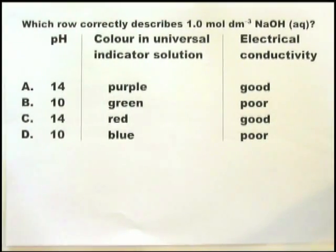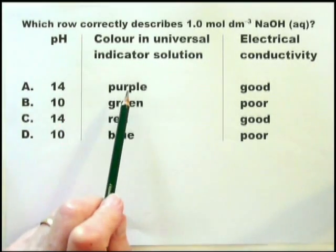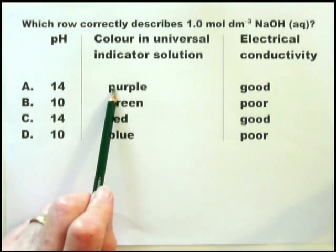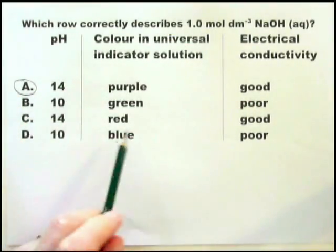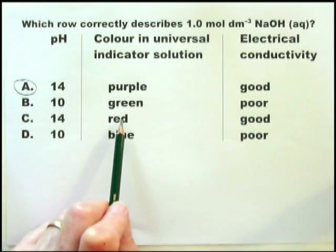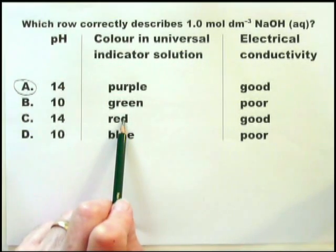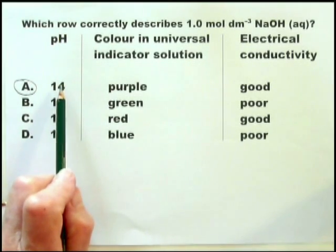When I see a solution of sodium hydroxide and I'm asked about pH, I immediately know that it's going to be a very high pH, 12, 13, or 14. I look at the color in the universal indicator solution and I say purple, that is sodium hydroxide. Then I check for the electrical conductivity: good. That is clearly sodium hydroxide. You may wonder about C, where it says the color is red—red indicates an acid, and sodium hydroxide is a base or an alkali. Therefore, A is the only possible answer.